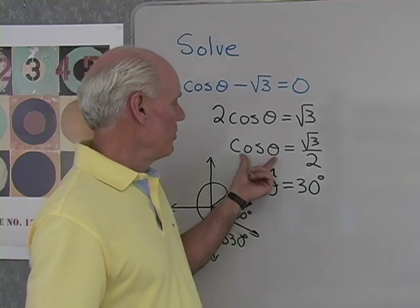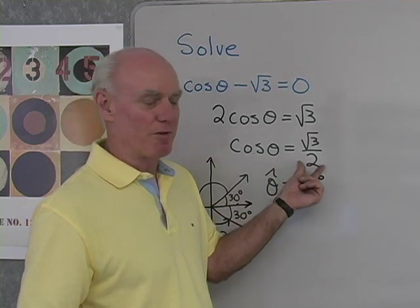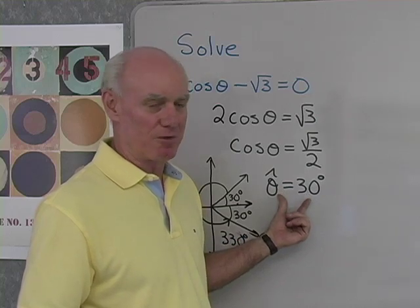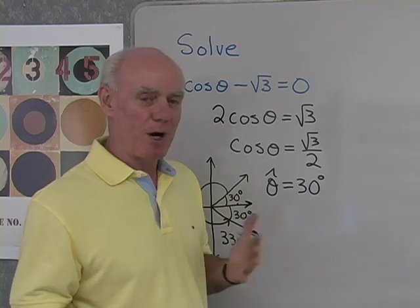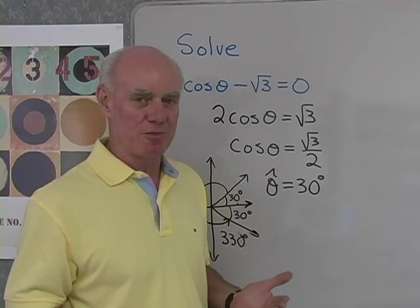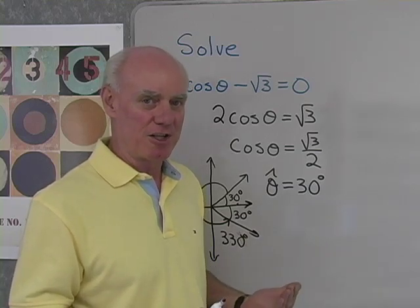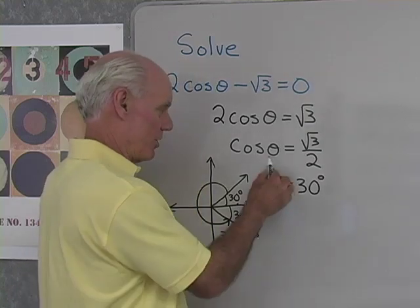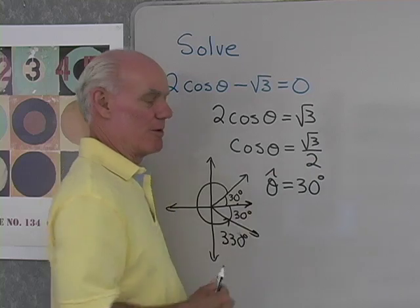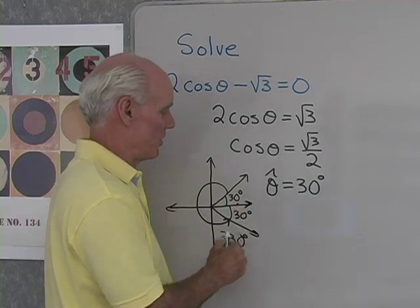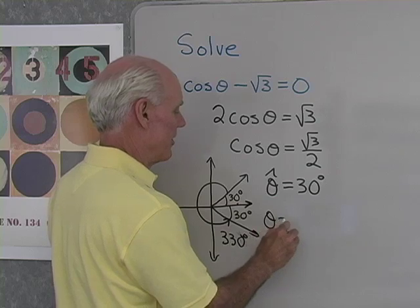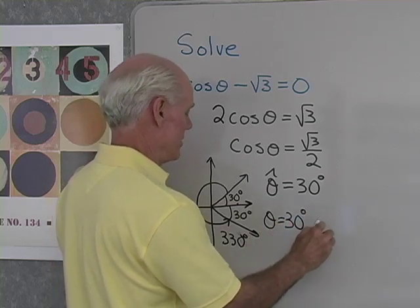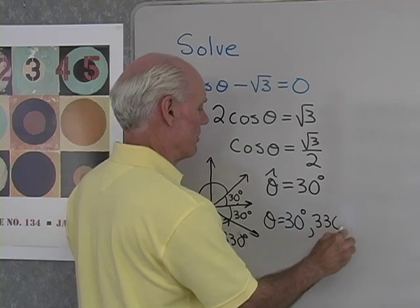If cosine theta is equal to square root 3 over 2, that tells me the reference angle is 30 degrees. I know there are two possible angles between 0 and 360 that have this reference angle and where the cosine is positive. That gives me theta equals 30 degrees and theta equals 330 degrees.